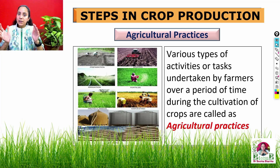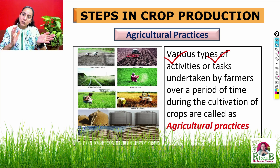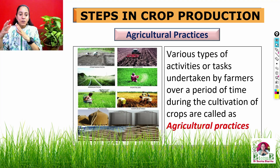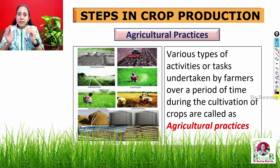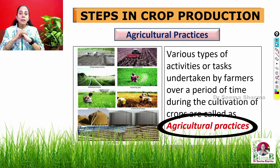A farmer carries out different activities or tasks, right from preparing the soil to storing the harvested produce. All of these are called agricultural practices, and there is a sequence to these agricultural activities.